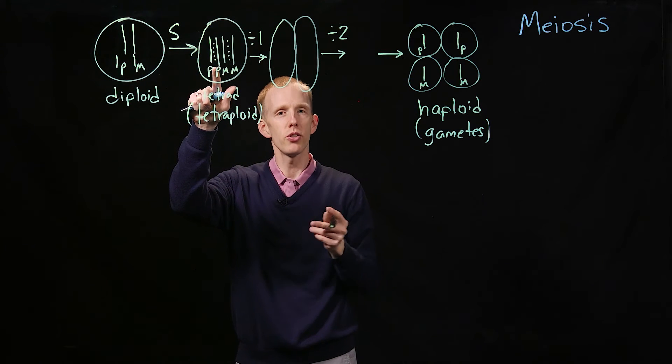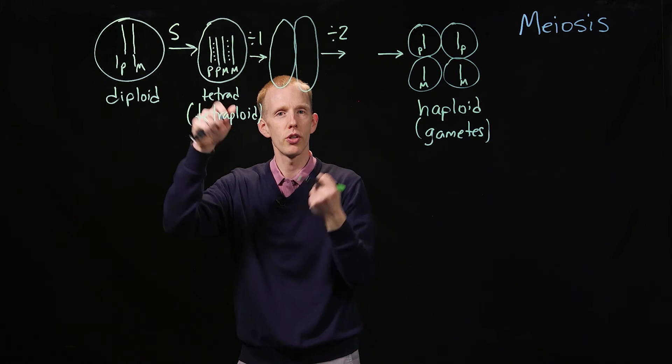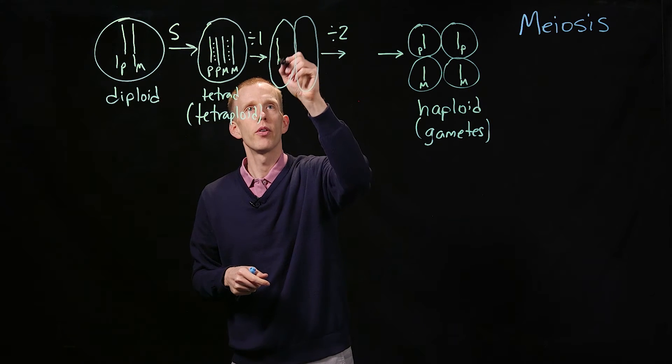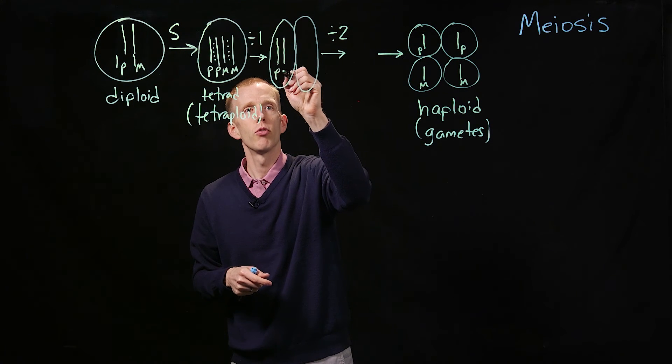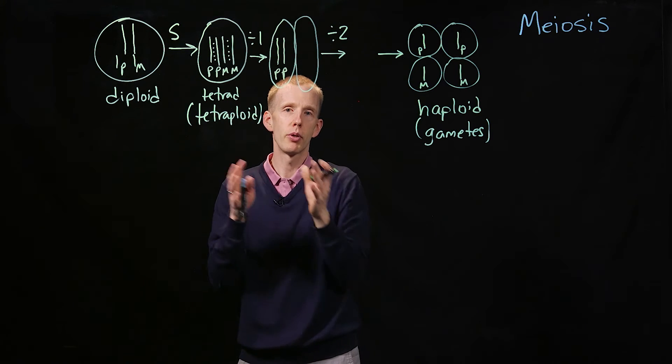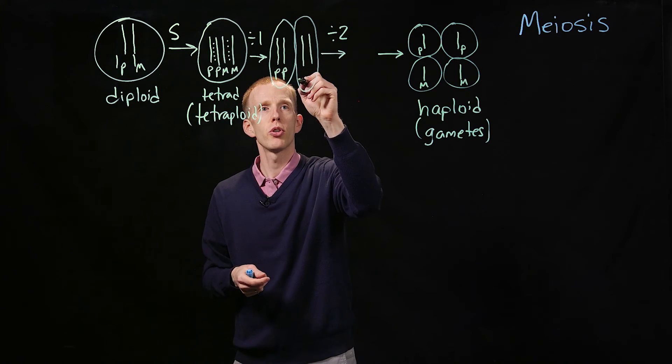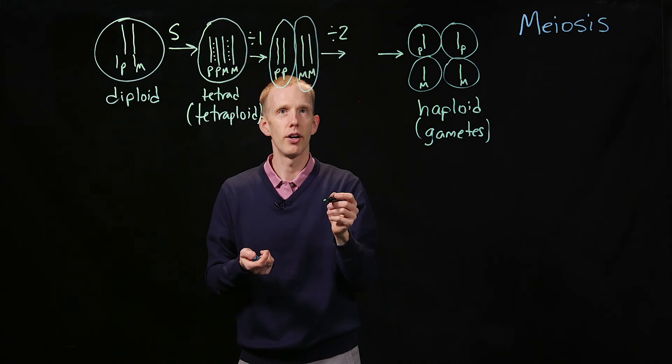Well, remember I said that the two sister chromatids, the two paternals, are held together more tightly than the tetrad as a whole. So at the first division, for one chromosome, we get both of the paternal versions of the chromosome go into one cell, and both of the maternal versions go into the other cell.